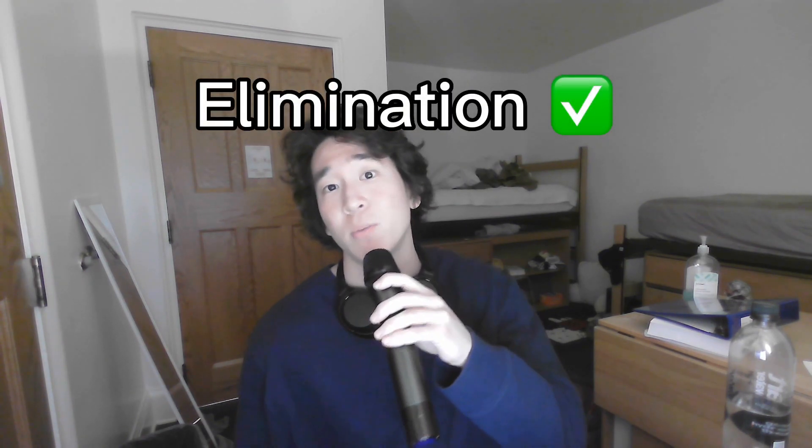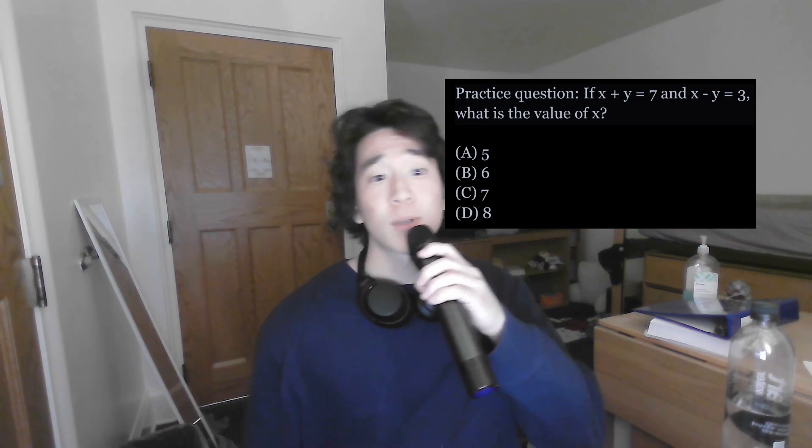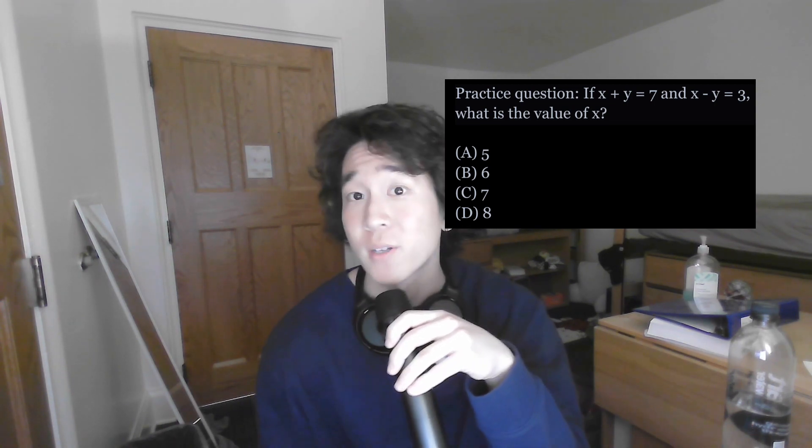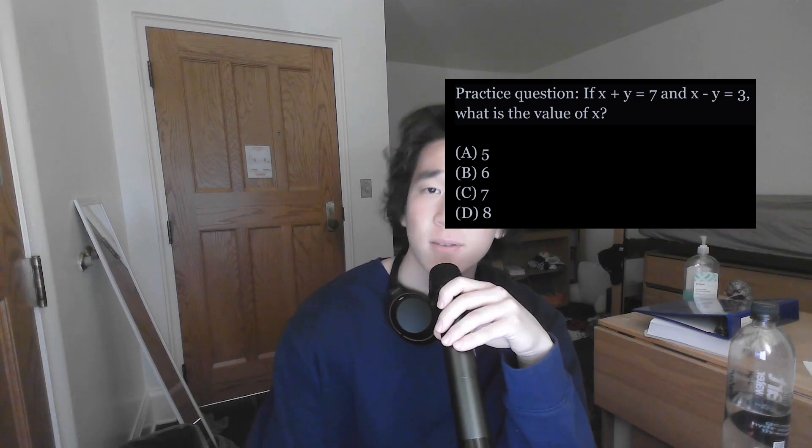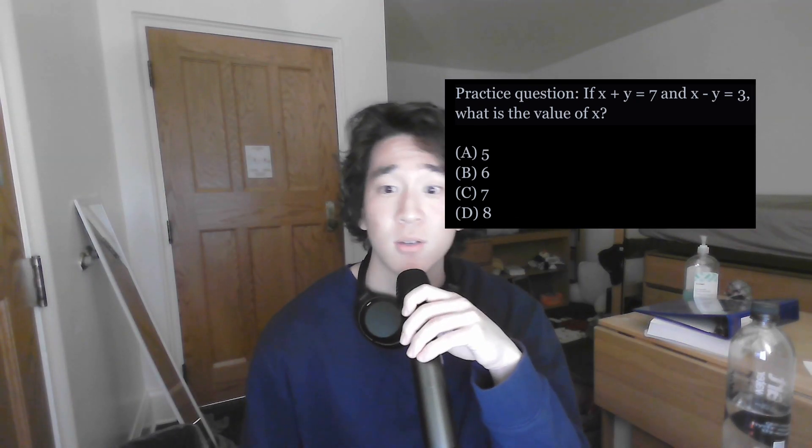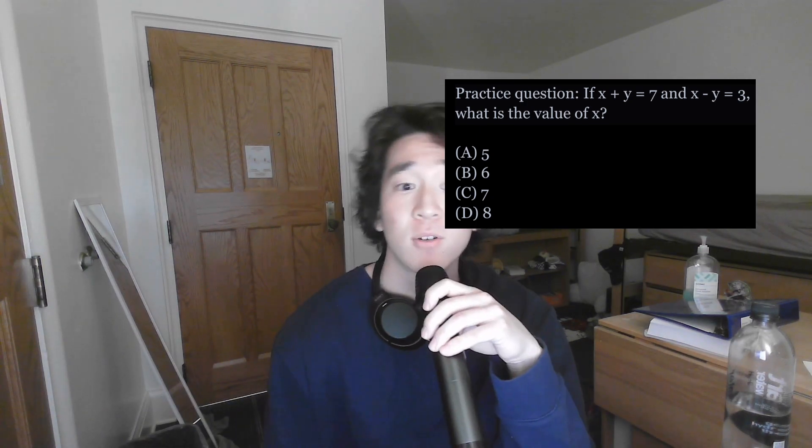The third tip is to learn to spot and remove incorrect response options. You'll save time and have a better shot of getting the proper response if you do this. Let's take this practice question: if x plus y equals 7 and x minus y equals 3, what is the value of x? The choices are 5, 6, 7, or 8. We can deduce from the first equation that x equals 7 minus y, and from the second that x equals 3 plus y. Putting these together: 7 minus y equals 3 plus y, which reduces to 4 equals 2y, then y equals 2. We plug back into the original equation and find that x is equal to 5.